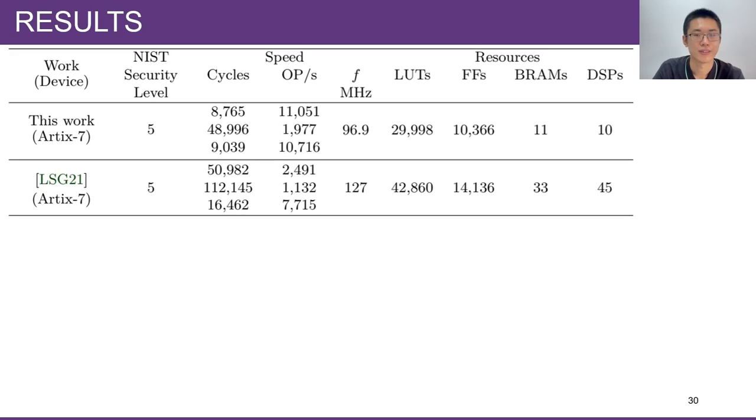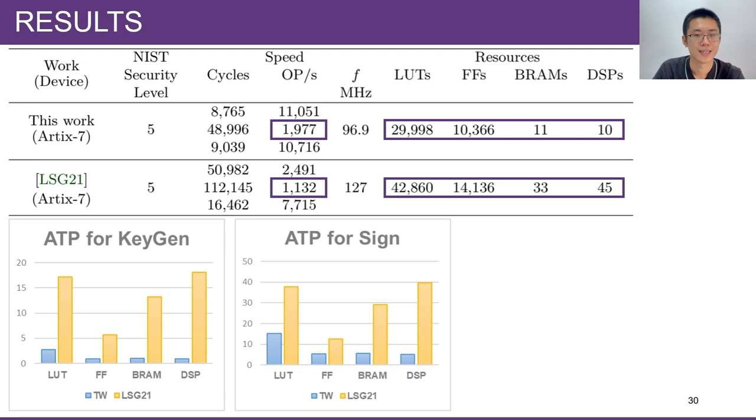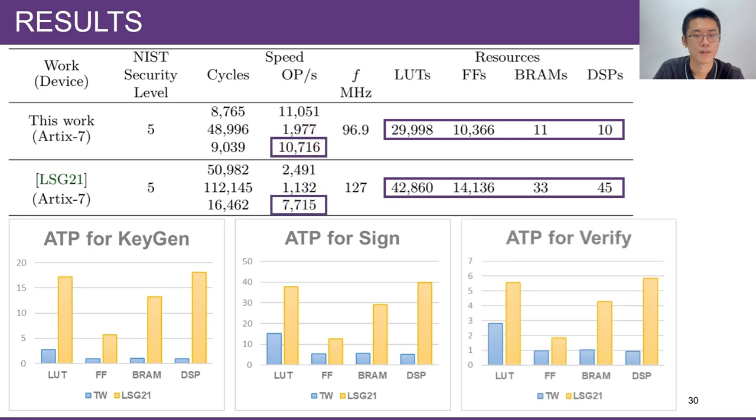To compare the efficiency of the implementations, we use ATP, short for Area-Time Product, which is measured by multiplying time by the number of lookup tables, flip-flops, BRAMs, and DSPs, respectively. For key generation, this work achieves a 6 to 20 times smaller ATP. For Sign, this work achieves a 2.4 to 7.9 times smaller ATP. For Verify, our ATP is 1.9 to 6.3 times smaller.